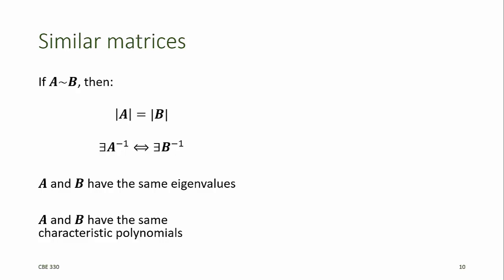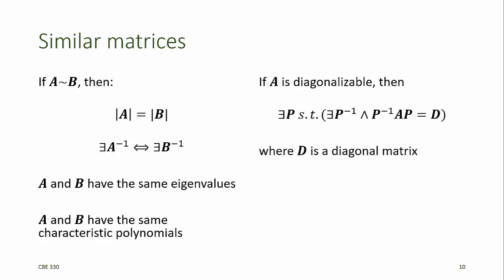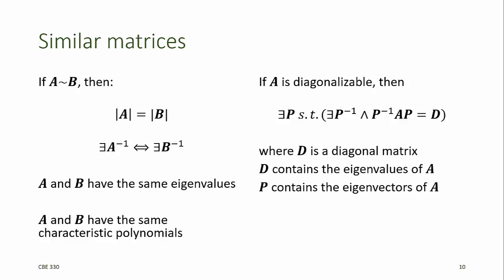Similar matrices also have the same characteristic polynomials. Furthermore, if A is diagonalizable, then there exists some P for which the inverse of P exists, and P can be used with a similarity transform of A to generate a diagonal matrix D, where D, because it's diagonal, contains the eigenvalues of A. A property of this matrix P is that P contains the eigenvectors of A that satisfy the matrix eigenvalue problem for A.